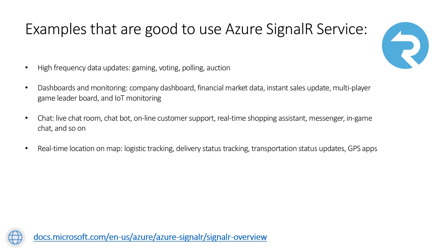Here are some examples that are good fits for Azure SignalR Service. It's perfect for high-frequency data updates like gaming or voting, for dashboards and monitoring — company dashboards, financial market data, etc. It's also a perfect match for chat applications to send real-time messages. And, of course, it's perfect for real-time location on a map — logistics tracking, delivery status tracking, transportation status updates, or GPS apps. This last example will be used in my demo.